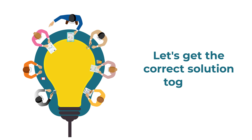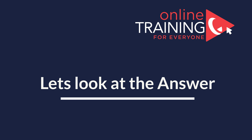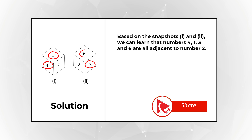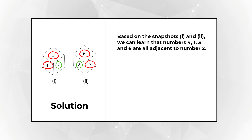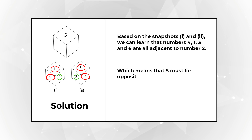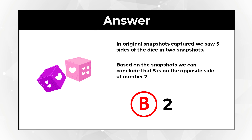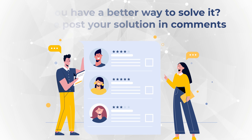Let's move forward and get to the correct solution together. Based on both snapshots, we can learn that numbers 4, 1, 3, and 6 are all adjacent to number 2. Because a dice only has 6 sides and 6 numbers, based on the 2 snapshots, we can determine that 5 must lie opposite of number 2. This is why, if 5 is at the top, then 2 must be at the bottom. Please share your thoughts and the way you solved this challenge in the comments.